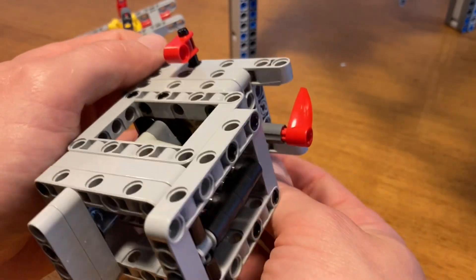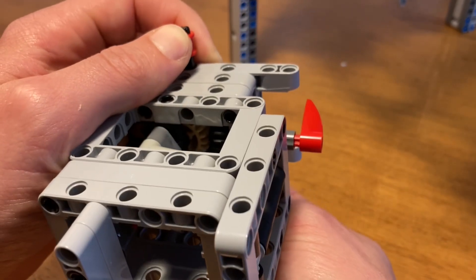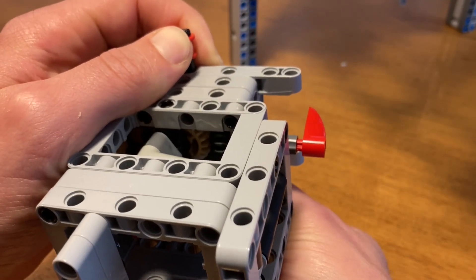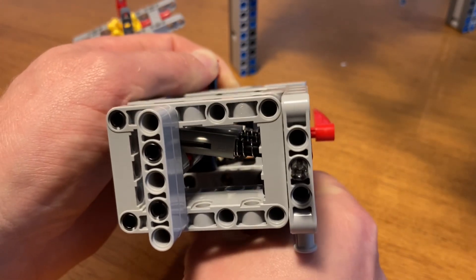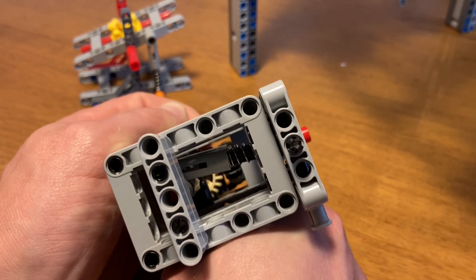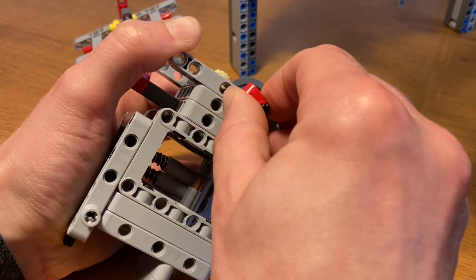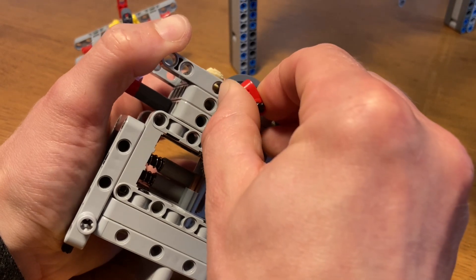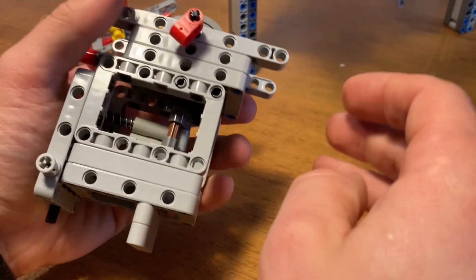On this setting we use the differential the other way around. The power input comes from one side, and with zero resistance the power is transported to the other side. But with any resistance on the output, the power difference has to go somewhere. So the differential turns - what will you notice when the red flag turns?